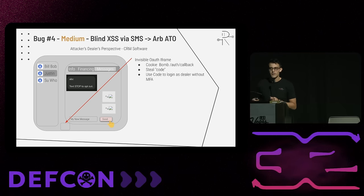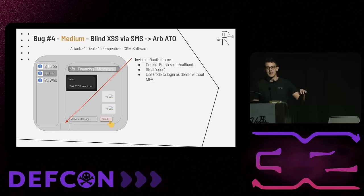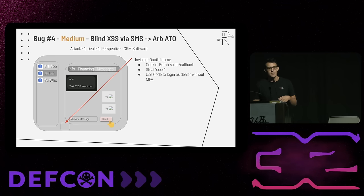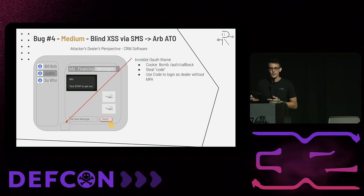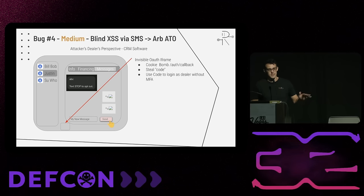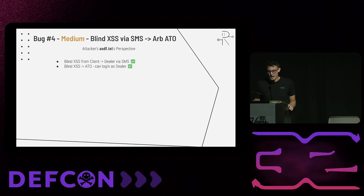The authorization flow happened in an invisible iframe right near this interface. It would go through the OAuth flow on a different domain and call back with just a token. Using the XSS, I cookie-bombed that callback location so the code wouldn't get consumed, then stole the code out of the iframe and exfiltrated it to the attacker server. Whenever the dealer comes back, their session token would be exfiltrated — the attacker can click the link and they're logged into the victim's dealer account without bypassing MFA.